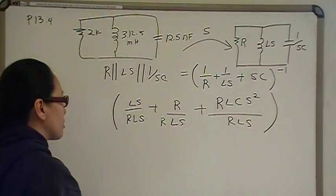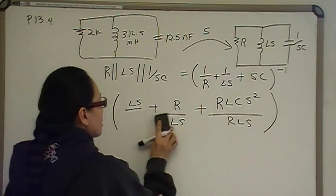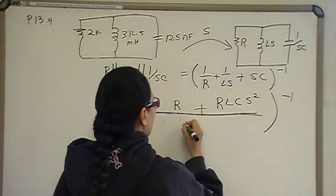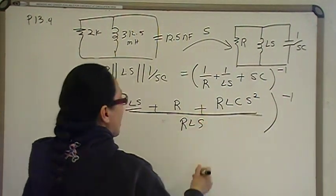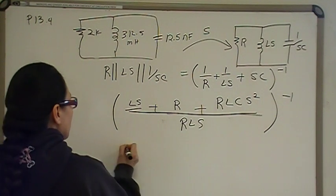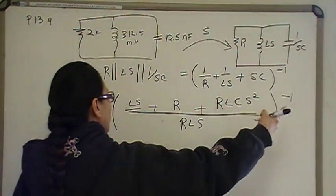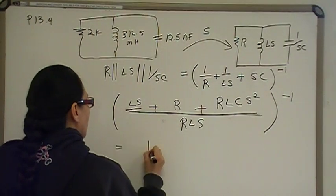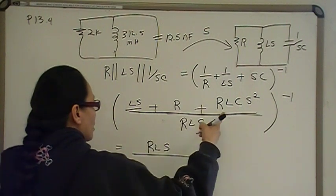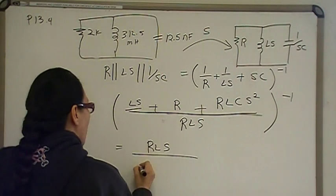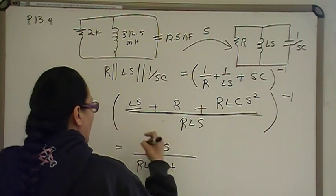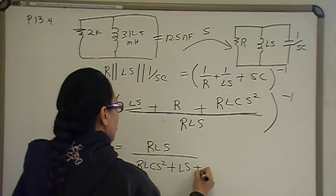So, now everything has a common denominator of RLS, right? So, everything is over RLS. So, now we can go ahead and take the inverse, and that's just flipping the fraction around. So, then this is really equal to, when we take the inverse, that's equal to RLS over, we're going to start with the highest power, which is RLCS squared, plus LS, plus R.